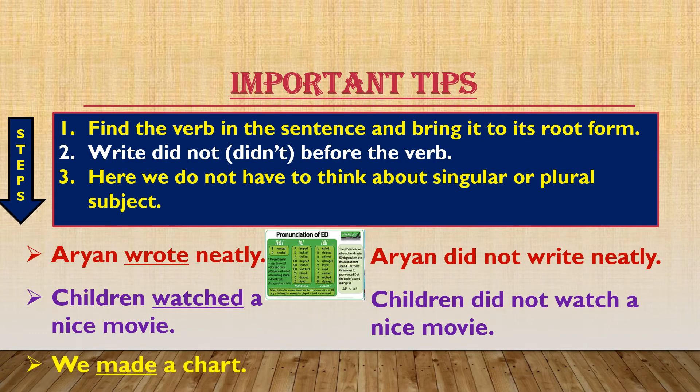Let us see another one. 'We made a chart.' The verb is 'made.' What is the root form? 'Make' — as in make, made, made. So 'make' is the first form of the verb here. Just add 'did not' before 'make,' and your sentence gets changed to negative: We did not make a chart.